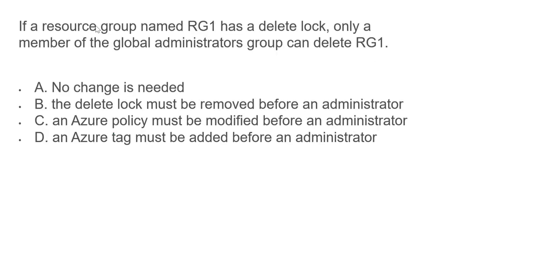The next question states: if a resource group named RG1 has a delete lock, it says only a member of the global admin group can delete the resource group — that's not true. When a resource group has a delete lock, you must remove the lock first. Even an admin cannot delete it directly. The first option is incorrect because it says admins can delete directly, which is not possible. The second option states the delete lock must be removed before an administrator can delete — yes, this is the right option.